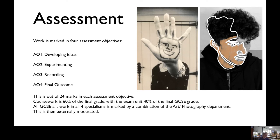Overall, this is out of 24 marks in each assessment objective. Coursework is 60% of the final grade, with the exam unit being the final 40%. All GCSE artwork in all four specialism sections is marked by a combination of the art and photography department, and then this is externally moderated.